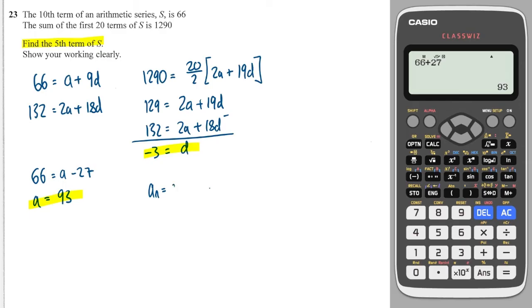So using the nth term sequence, which is given as this, I'm looking for a5. So I need a, which is 93 plus 5 minus 1, which is 4 times by minus 3. So 93 plus 4 times minus 3 is 81. And that's our final answer.